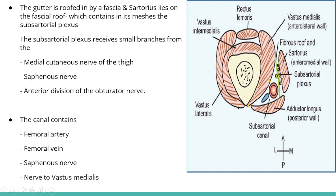The fascial roof contains the subsartorial plexus. The subsartorial plexus is actually made up of small branches from the medial cutaneous nerve of the thigh, the saphenous nerve, and the anterior division of the obturator nerve. This plexus is located between this fascia and beneath the sartorius muscle.